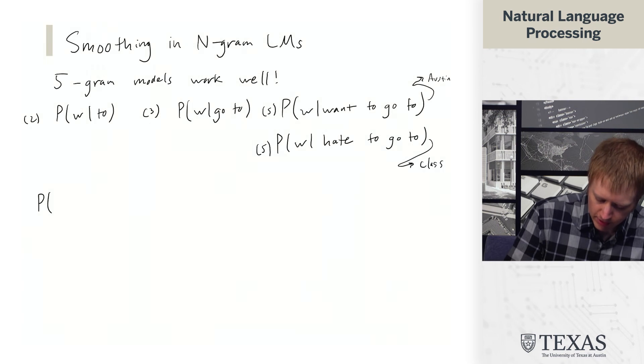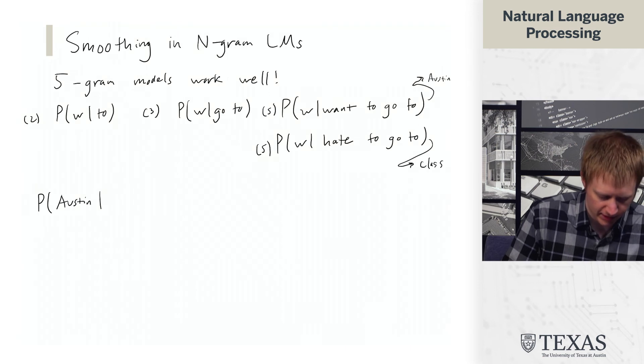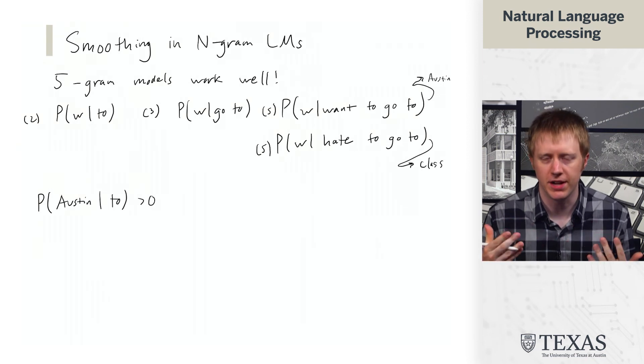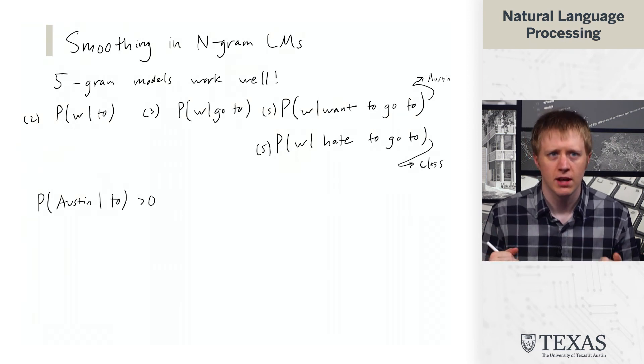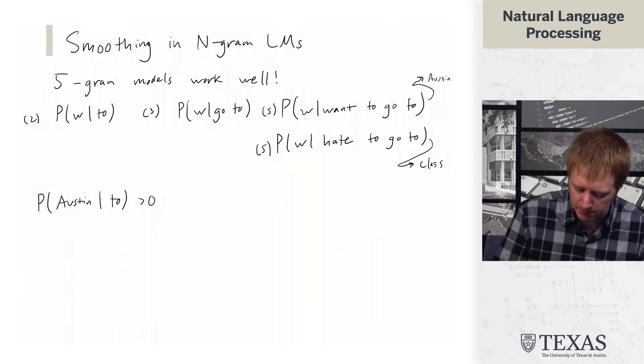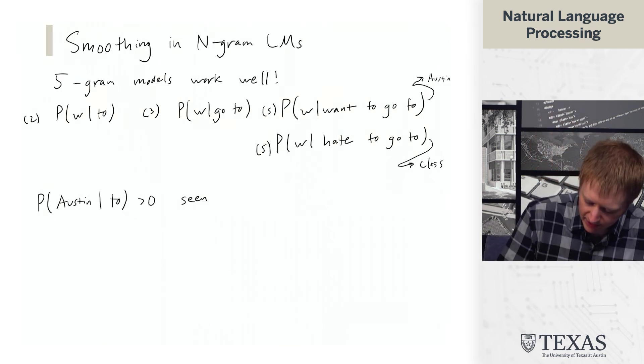So suppose that we have the probability of Austin given 2. Assuming we have a big enough data set that contains the word Austin, we're probably going to see it in some construction of 2 Austin, and so this is going to be greater than zero because it's seen in the data.